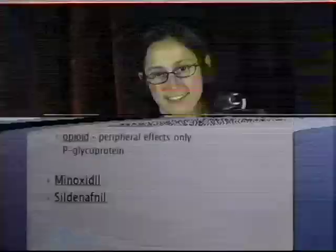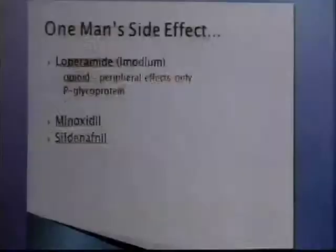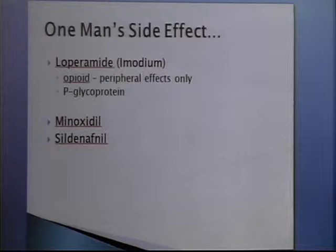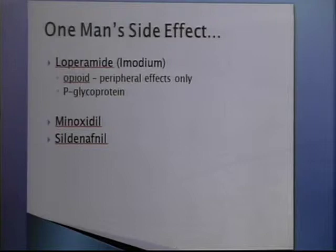A couple of other drugs with interesting side effects. Minoxidil was developed as a vasodilator to dilate blood vessels and help with blood pressure, but it had this annoying side effect of extra hair growth. So now it's marketed as Rogaine for people going bald who want to grow more hair. Another one is sildenafil — also developed as a vasodilator for blood pressure — and it dilates blood vessels but turns out to be a little more selective. It's better known as Viagra.